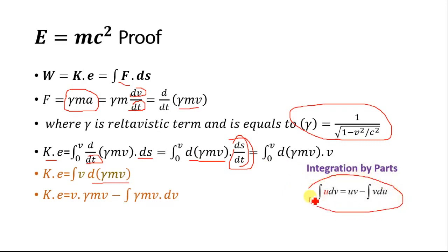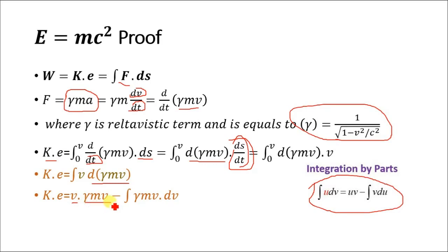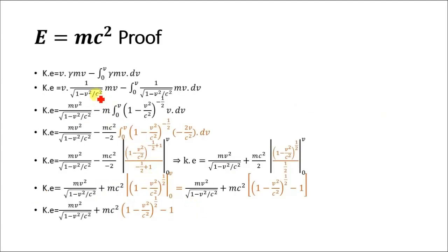The formula for integration by parts is given as: the first term times the second term equals uv minus the integral of the second term dot dv. So integrating by parts we will get the new equation: kinetic energy is equal to velocity into gamma mv minus the integral of gamma mv dot dv. Now gamma is equal to 1 over the square root of 1 minus v square by c square. Putting the value for gamma, we will get minus the integral from 0 to v of 1 over the square root of 1 minus v square by c square into mv dot dv.